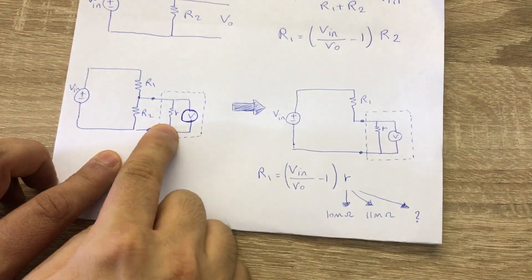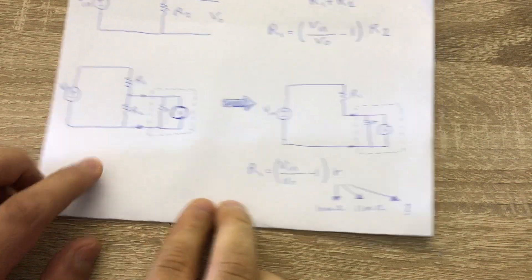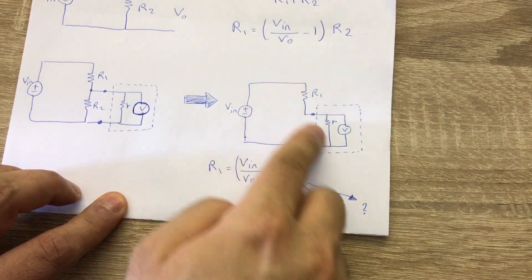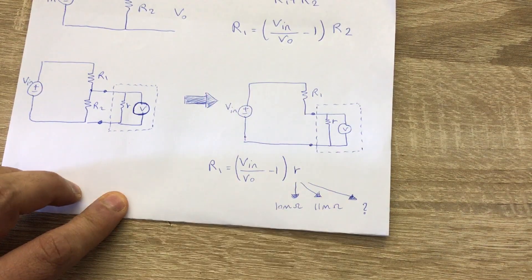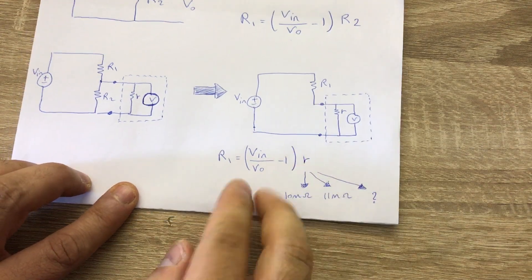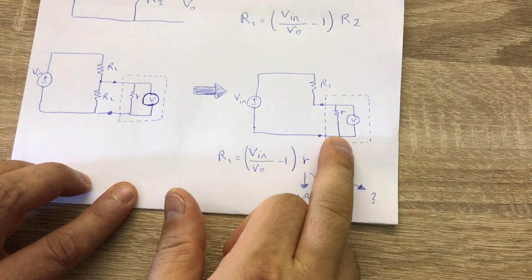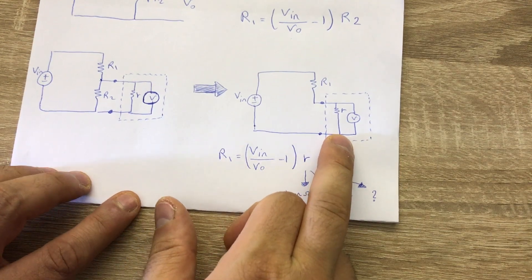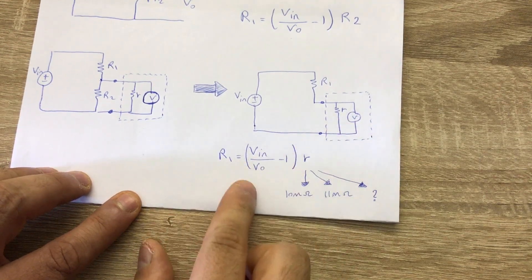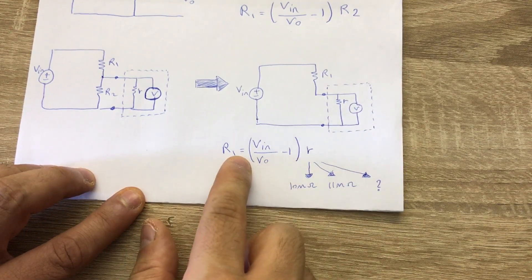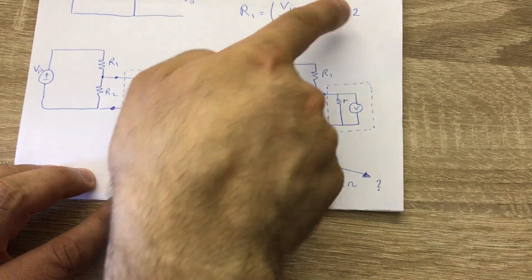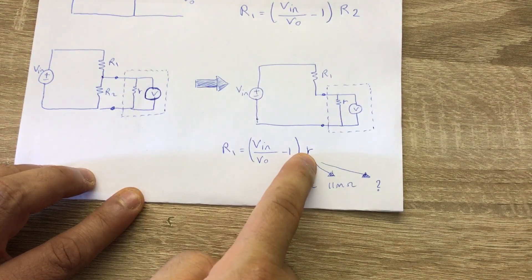The trick is that we don't place a physical R2 at all. Instead, we use the internal resistance of the multimeter itself as part of the voltage divider circuitry. So R1 is the unknown resistance we want to measure, and in place of R2 we use the multimeter's internal resistance.